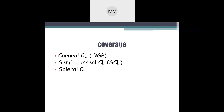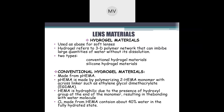According to corneal coverage, lenses are classified into corneal lenses, semi-corneal lenses, and scleral contact lenses. Corneal lenses — RGP lenses — rest entirely on the patient's cornea. Semi-corneal lenses, also known as soft contact lenses, cover the cornea as well as the scleral area. Scleral contact lenses are larger than the cornea and cover the entire cornea as well as the conjunctiva.